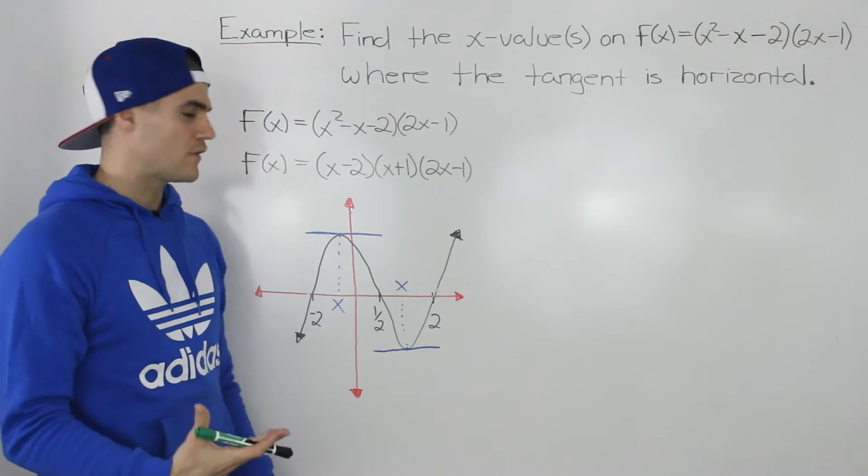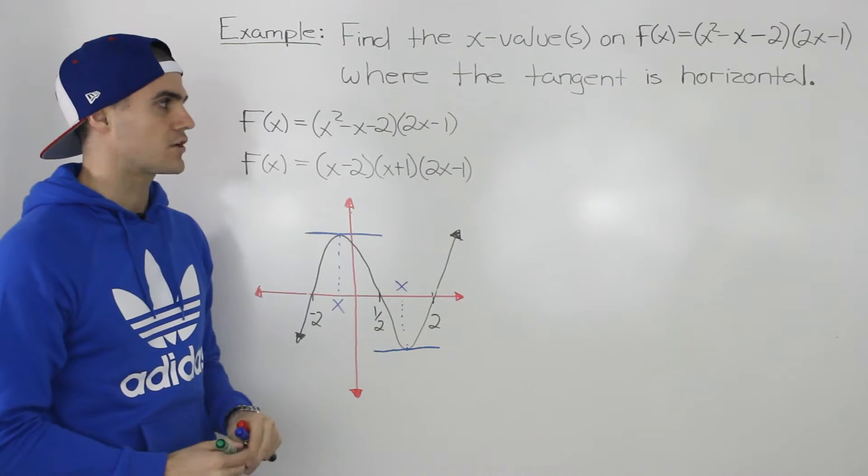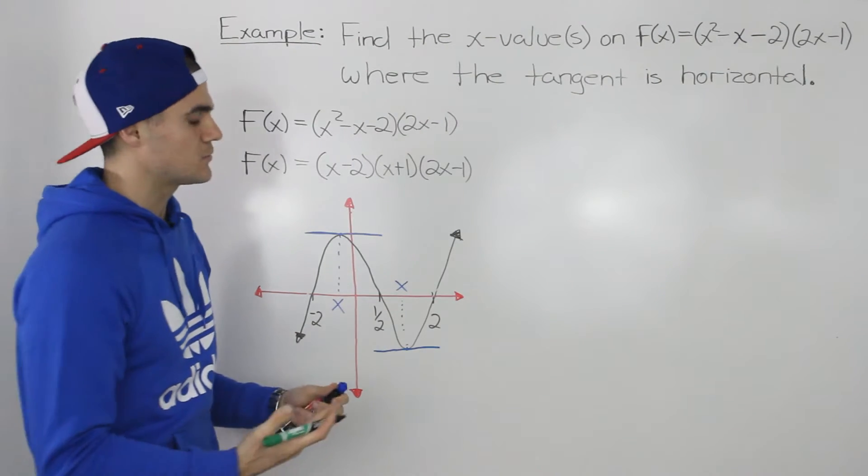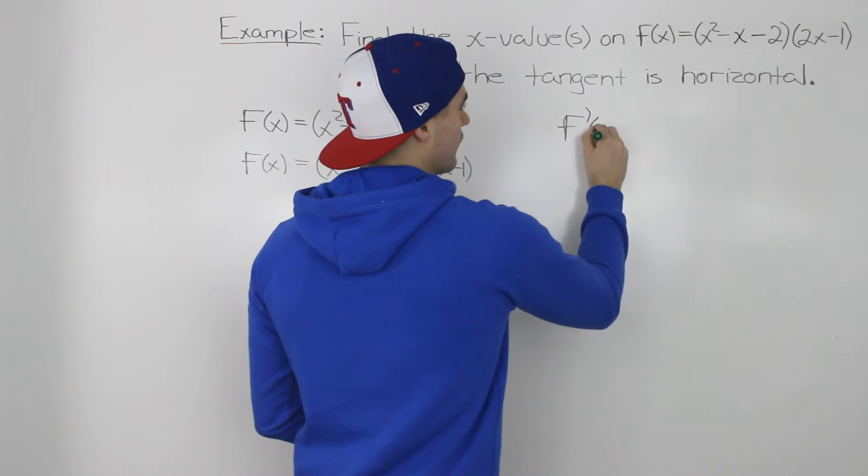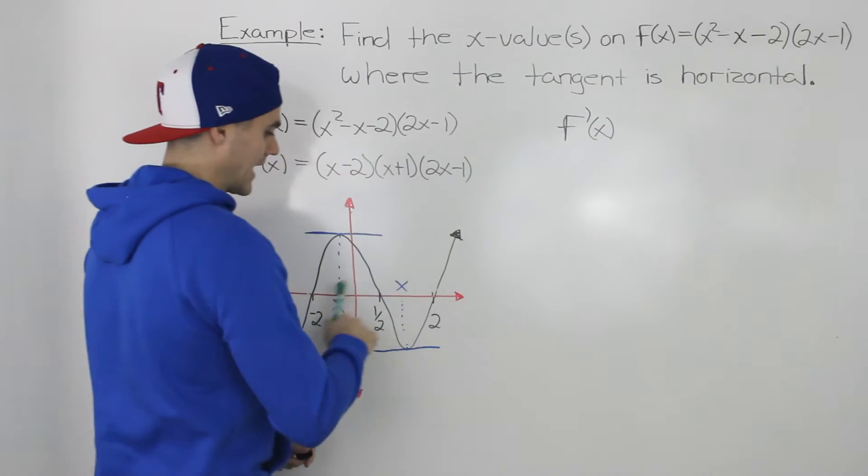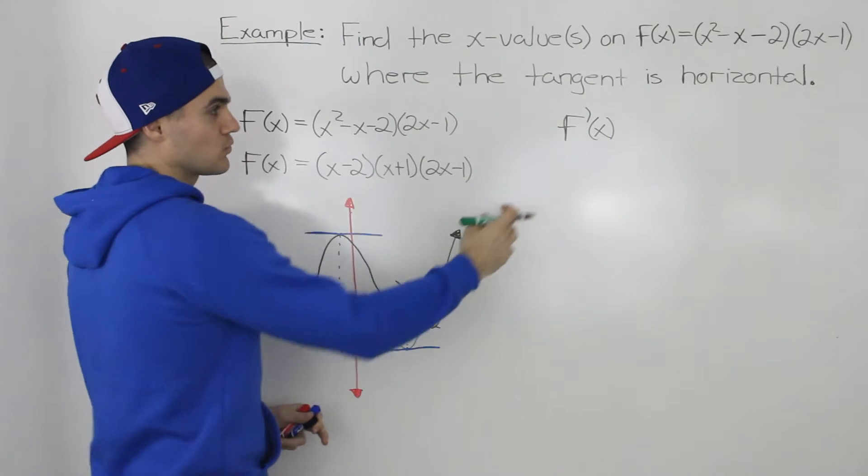The problem is how do we find those x values for which those horizontal tangents occur? Well, because we're dealing with tangents, we know that we can find the slope of a tangent at any x value on this function with its derivative.